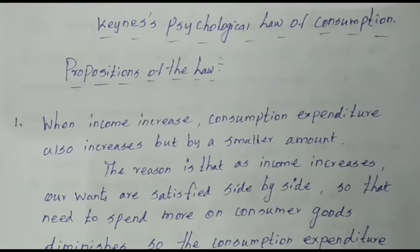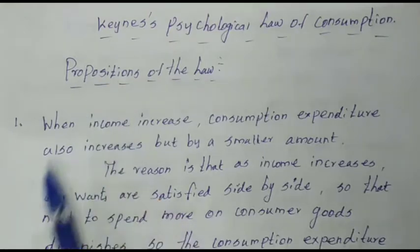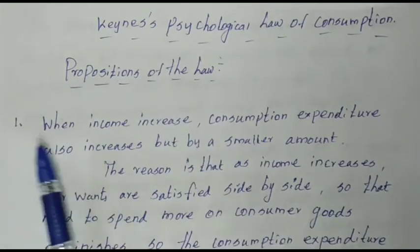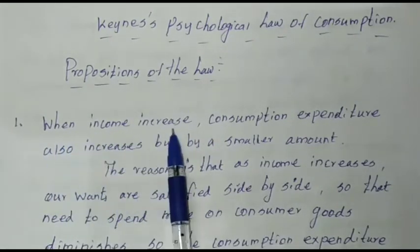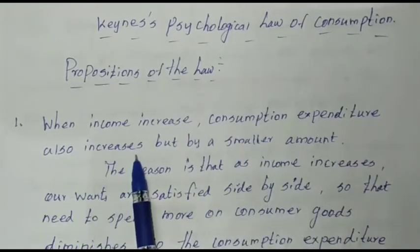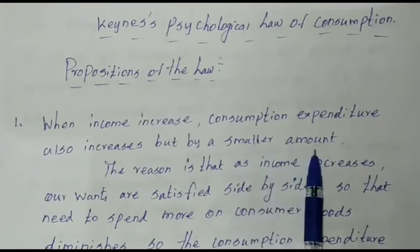When the income increases, the consumption increases at the same time, and savings will also be done. The first proportion is: when income increases, the consumption expenditure also increases, but by a smaller amount.